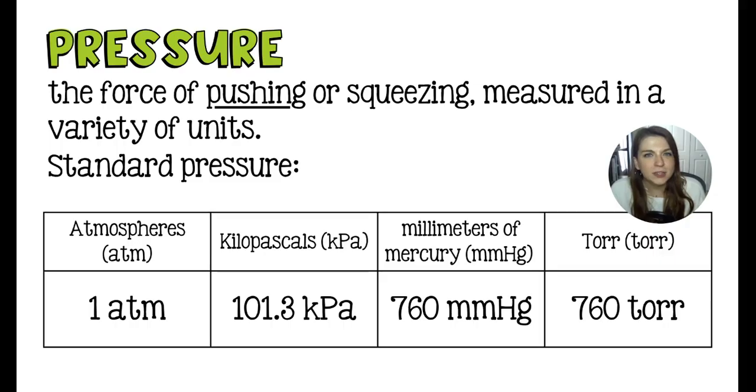I spoke about this in the last video. So pressure is the force of pushing or squeezing, and we can measure that in a variety of units in chemistry. Standard pressure is the one that happens at sea level on Earth. So that is these four equivalent values of 1 atmosphere, which is what we use most often in our equations. We can also use 101.3 kilopascals, 760 millimeters of mercury, or 760 torr.